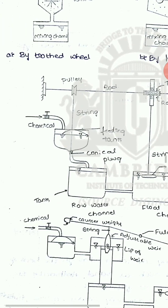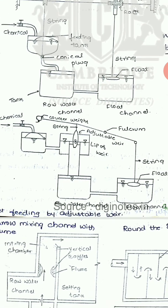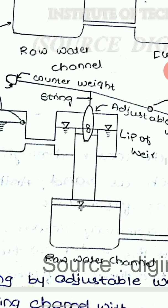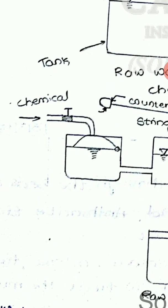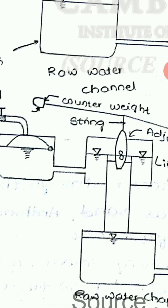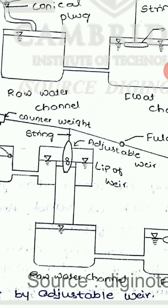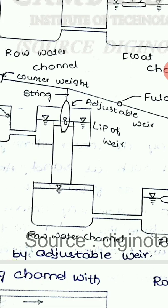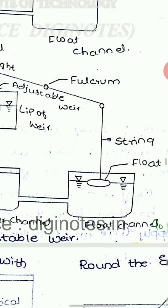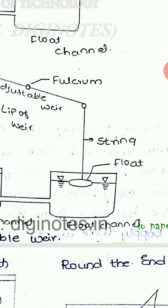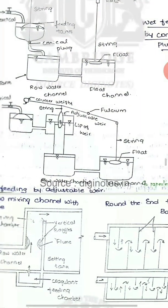From the float channel, the chemically mixed water is collected in the flocculation chamber. The second wet feeding device is slightly different in arrangement but works similarly — chemicals enter through the funnel, the plug controls entry into the tank, raw water mixes with the chemicals, and the mixed water enters the flocculation chamber for flocculation.